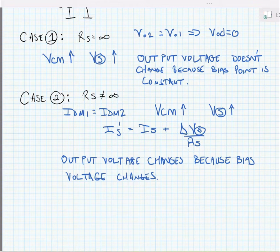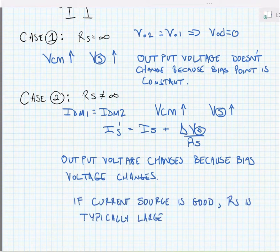Now, ideally, it still doesn't result in a change in the differential output voltage, but we will see the bias point change. It's good to know when we make good current sources, RS is typically a very large value. And if RS is typically a very large value, that means that whatever change in voltage happens at the source has a minimal impact on the performance of the circuit.